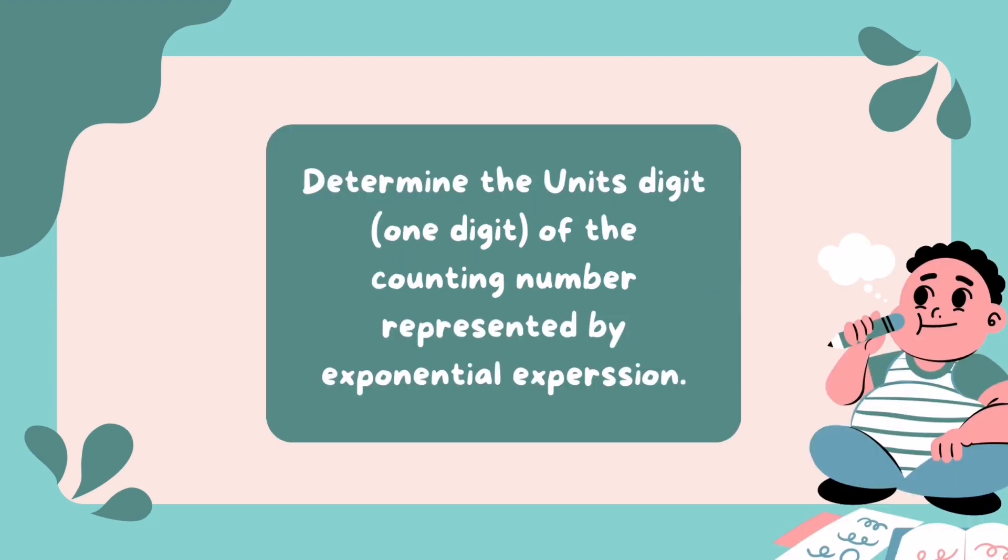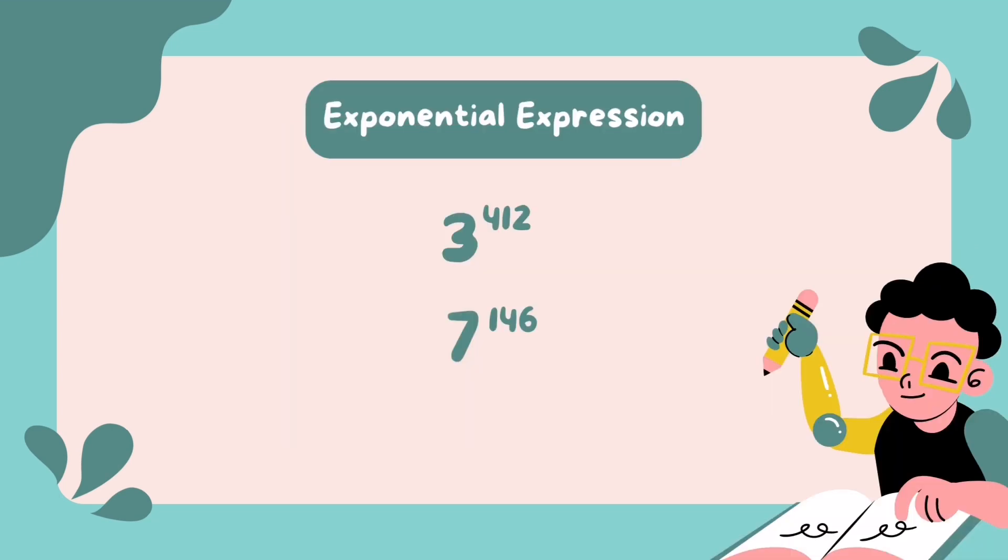To determine the unit's digit of a power of a number, we need to examine the pattern of the unit's digit of the successive powers of that number.